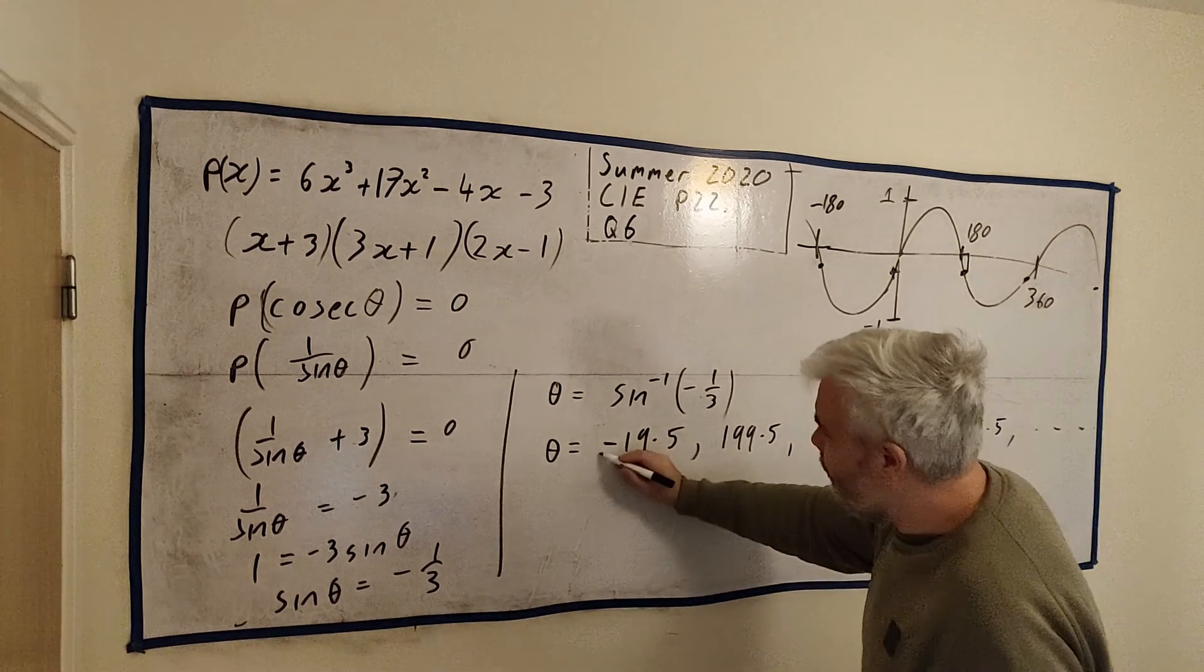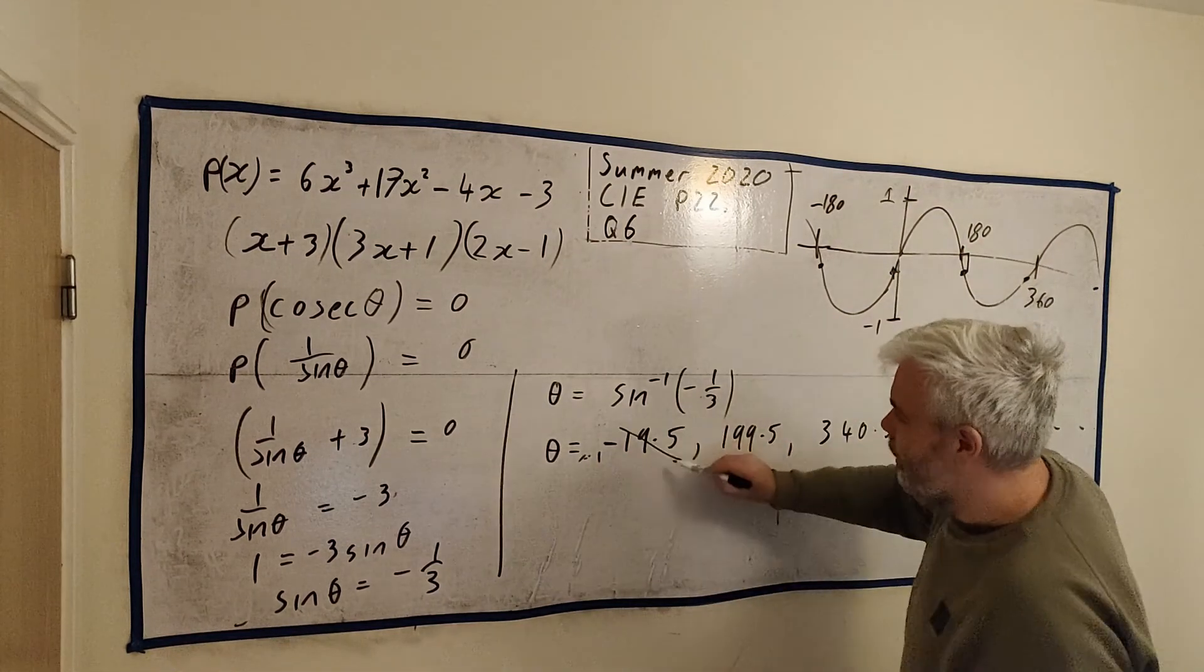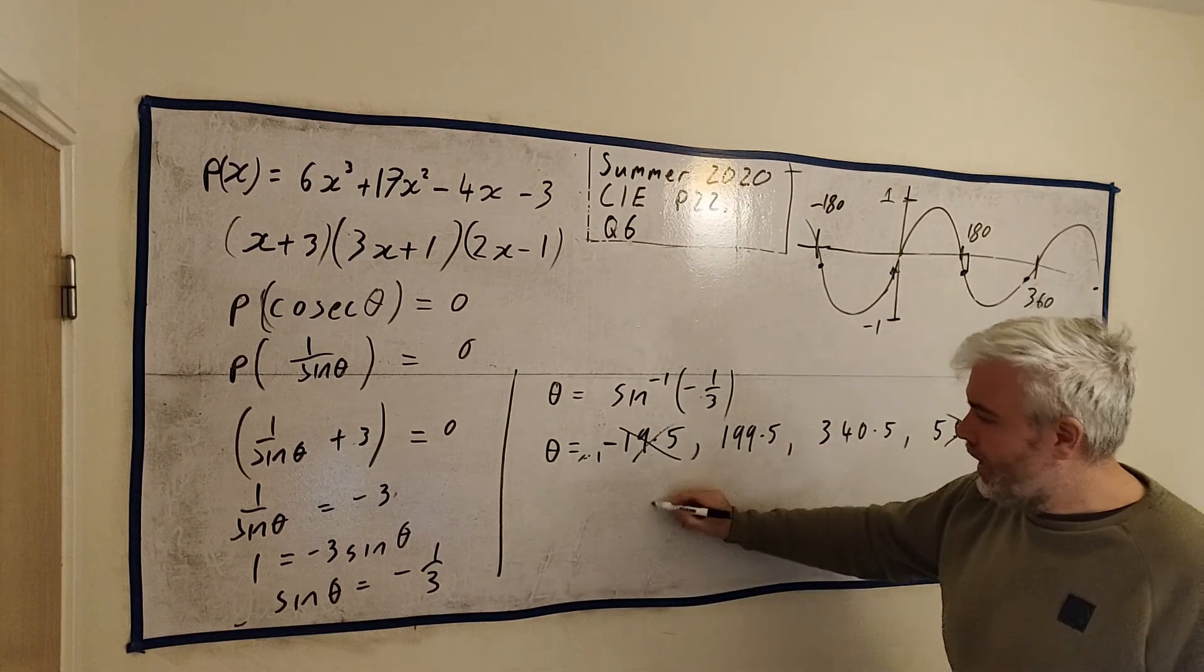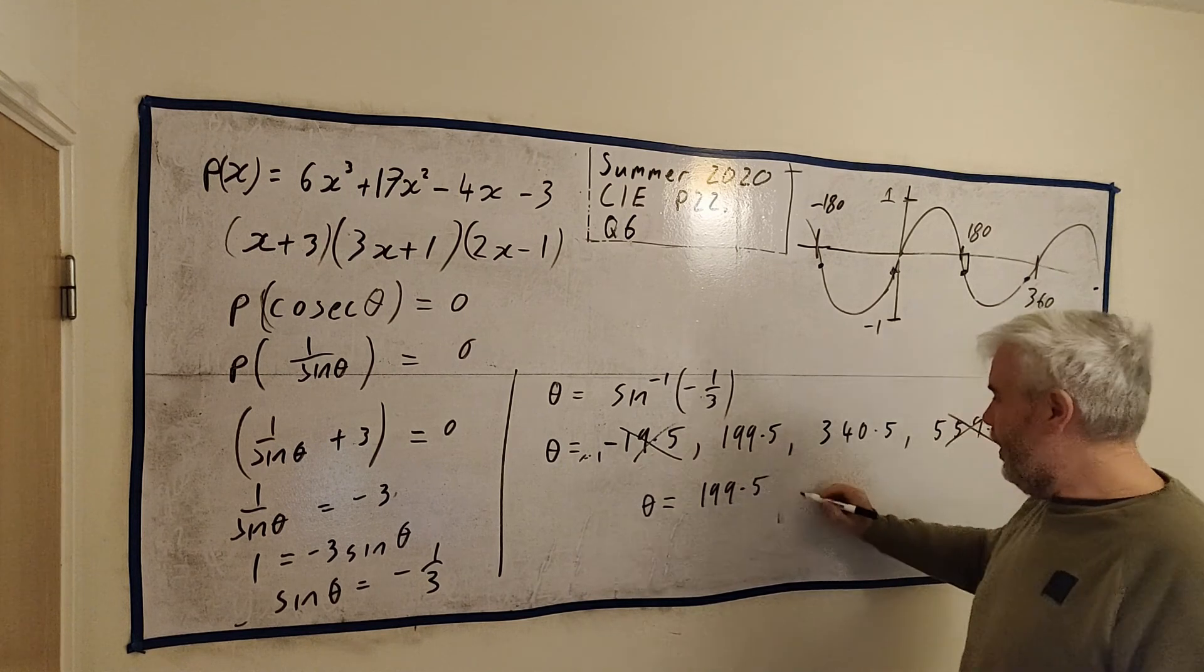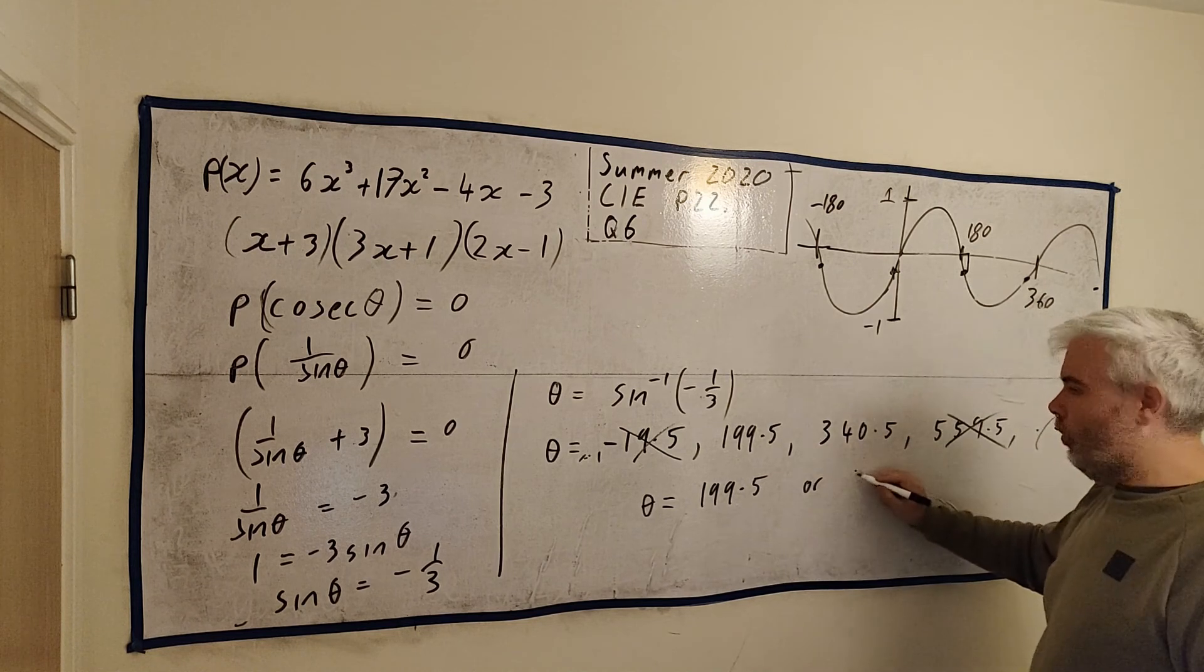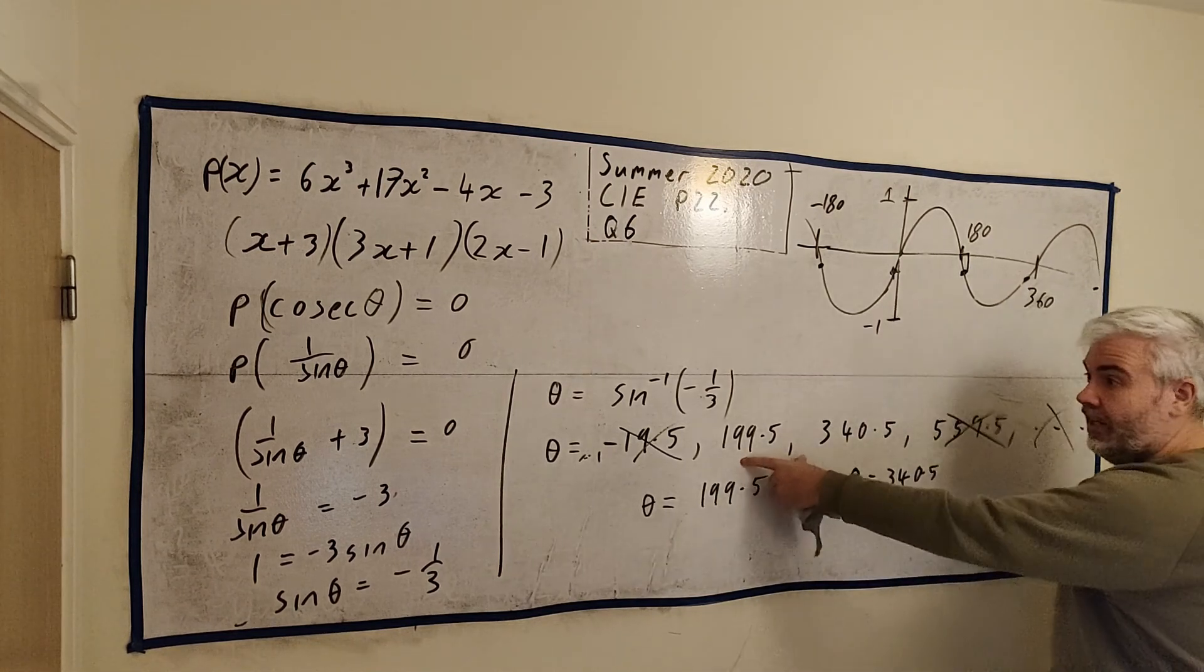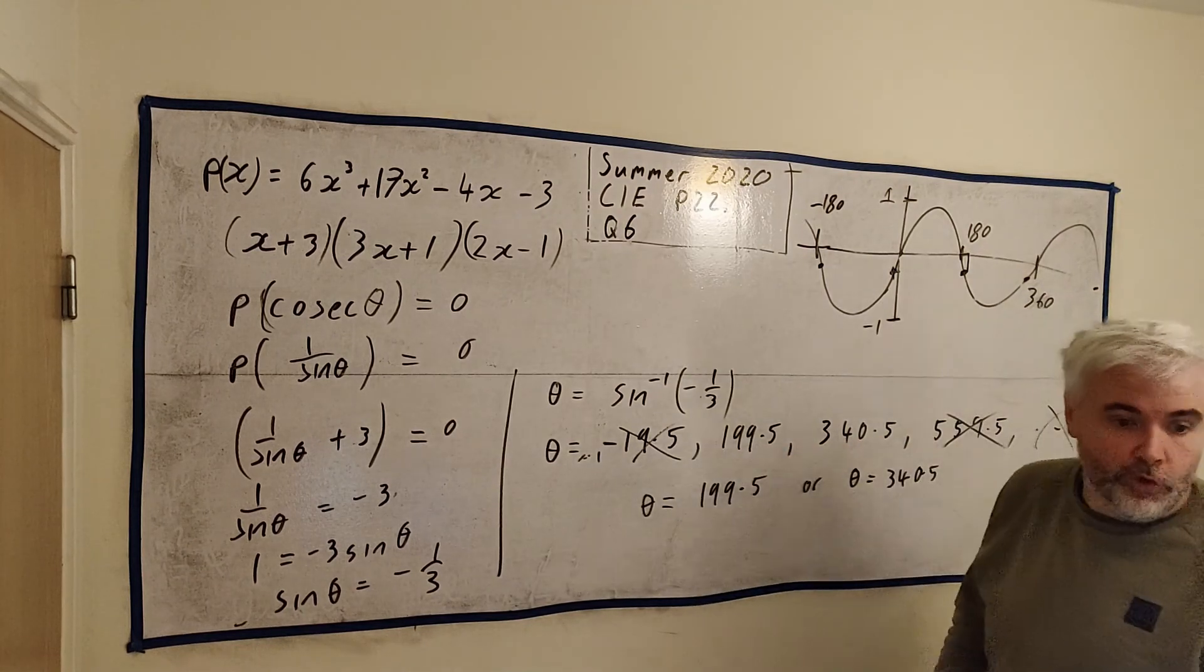This one is not right. They don't want anything less than zero. They don't want anything bigger than 360. Here's our two answers. And this is the full marks for the question. Theta is equal 199.5, or theta is equal 340.5. Usually I just put this line here. Theta is equal this, comma, this. There's our multiple choices for the answer.